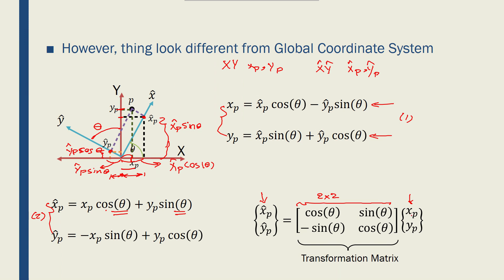So cos theta times xp plus sine theta times yp. And y hat p is equal to minus xp times sine theta plus yp times cos theta. So minus sine theta times xp, cos theta times yp. And that creates a transformation matrix for two coordinate systems.